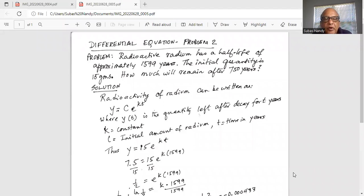Differential equation problem 2. Radioactive radium has a half-life of approximately 1,599 years. The initial quantity is 15 grams. How much will remain after 750 years? That's the question we have to solve.